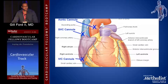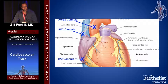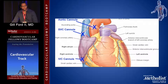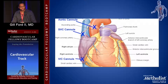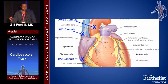For cannulation, the sites on the right side of the heart are typically the SVC or IVC, depending on the procedure. We'll do bicaval cannulation for any procedure that requires us to open the heart. For a straightforward case like a CABG, we'll use a dual-stage cannula in the right atrium. For arterial cannulation, we usually go into the ascending aorta. Peripheral cannulation is used for minimally invasive procedures or when crashing onto bypass in an emergency.